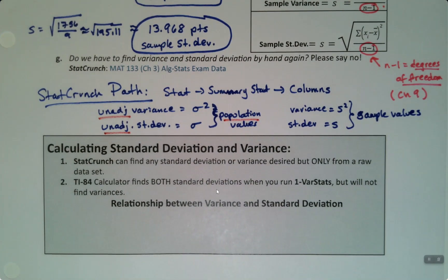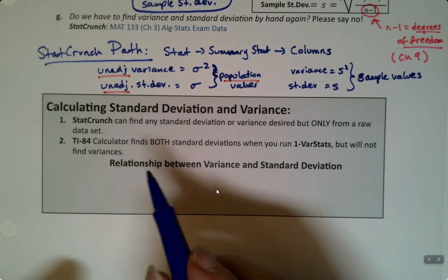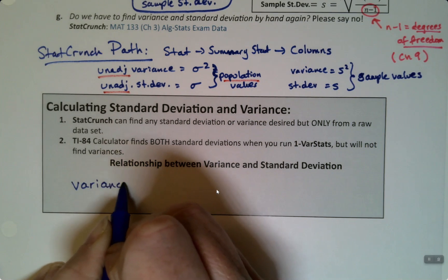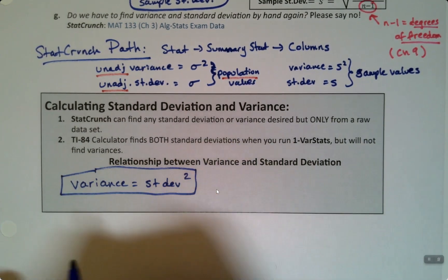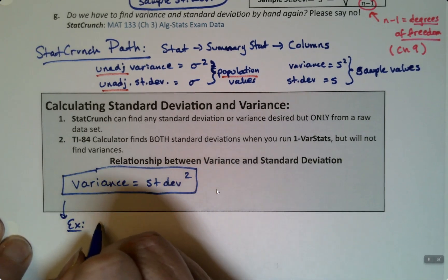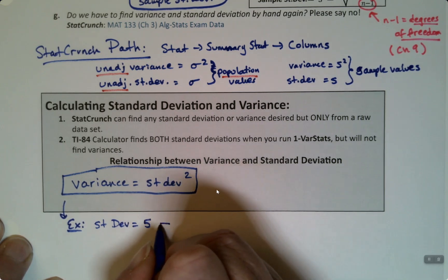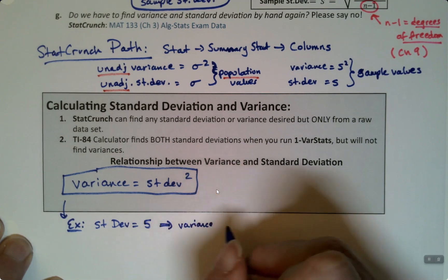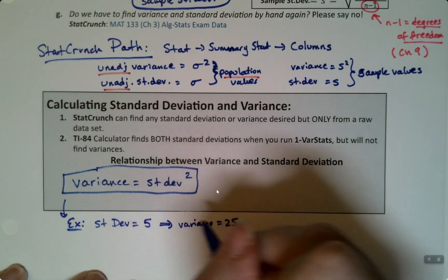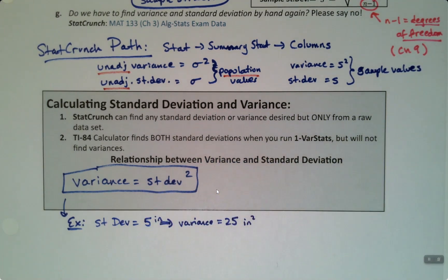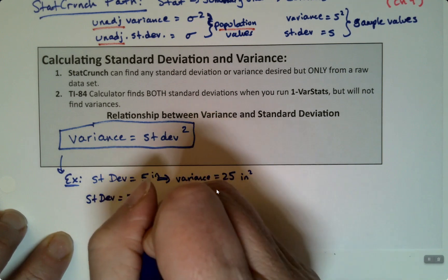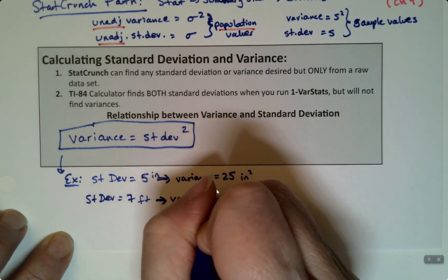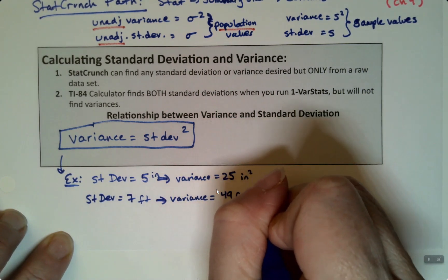Before we leave this page: the relationship between variance and standard deviation. The variance is the standard deviation squared. For example, if the standard deviation is 5 inches, then the variance is 25 inches squared. One more example: if the standard deviation is 7 feet, then the variance is 49 feet squared. That is how the units work.